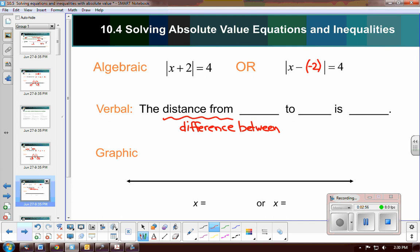Now we can use that to write a verbal description. The distance from negative 2 to my answer x is 4 units. So I would start at negative 2, and I would move 4 units to the right, and 4 units to the left, and I would end up at a solution of 2, and a solution of negative 6.